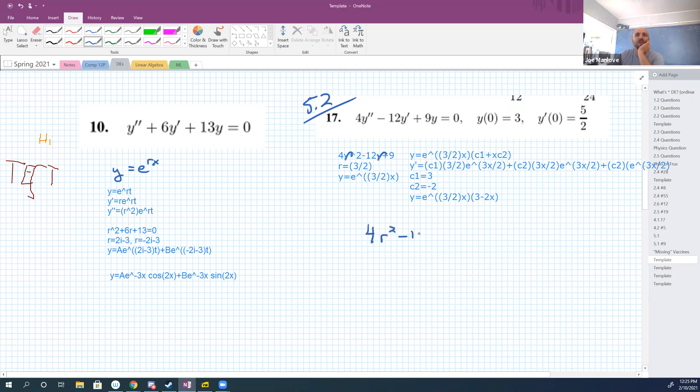Of four r squared minus 12r plus nine equals zero. I used the quadratic formula because guessing and checking on this would be horrible. I ended up getting r equals three halves only, r equals three halves, because the square root goes to zero.